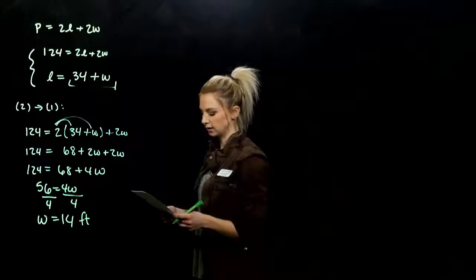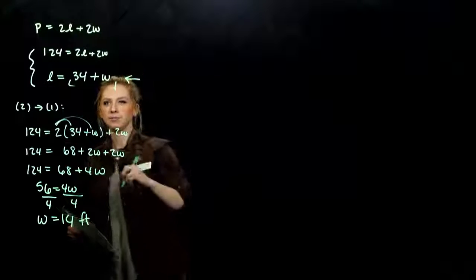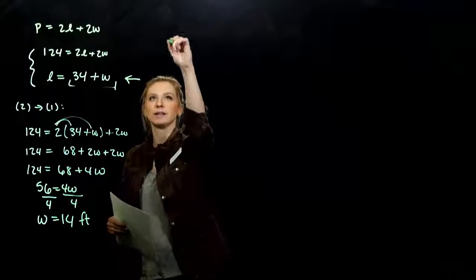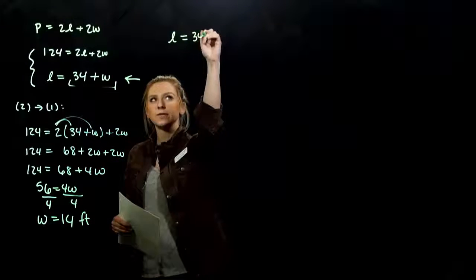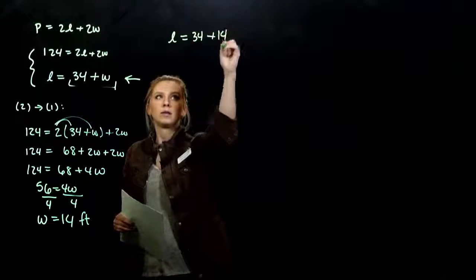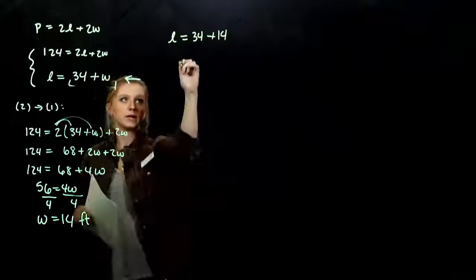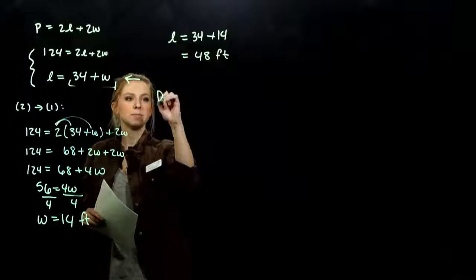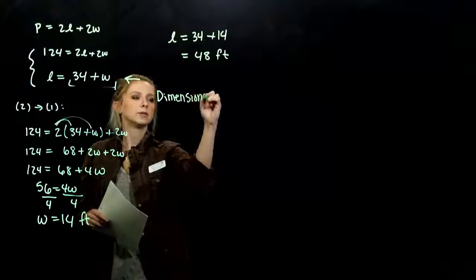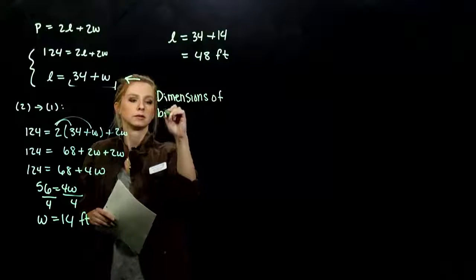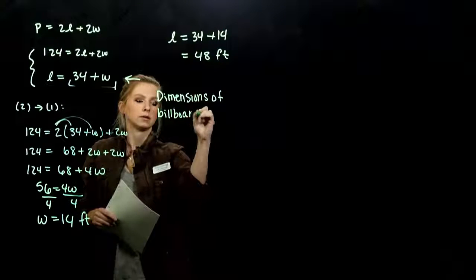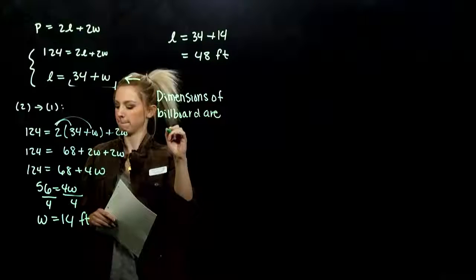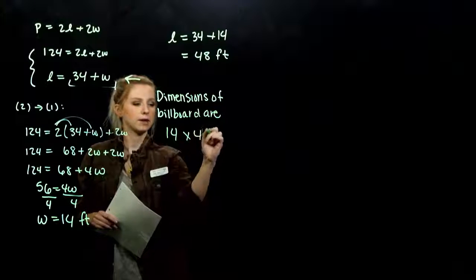What's the easiest thing to do? Plug it back into the second equation, since L is already isolated. The length is 34 feet more than the width. So if we add those together, the length is 48 feet. So the dimensions of the billboard are 14 by 48 feet.